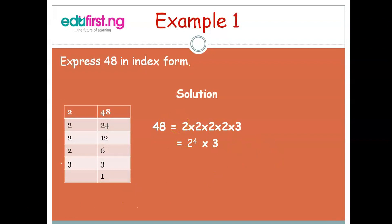Let's take an example: express 48 in index form. Solution — to express 48 in index form, let's divide 48 by 2 to get 24, divide 24 by 2 to get 12, divide 12 by 2 to get 6, divide 6 by 2 to get 3, then divide 3 by 3 to get 1. So 48 equals 2 × 2 × 2 × 2 × 3, which is equivalent to 2 raised to the power 4, multiplied by 3.